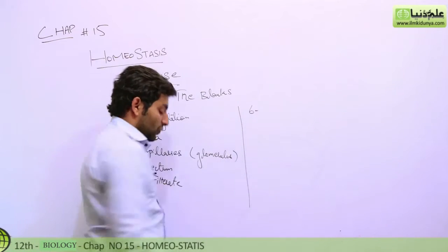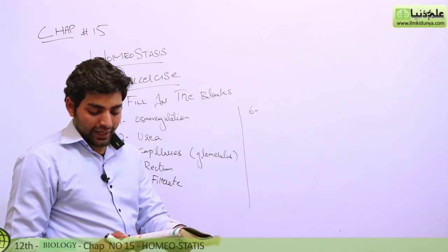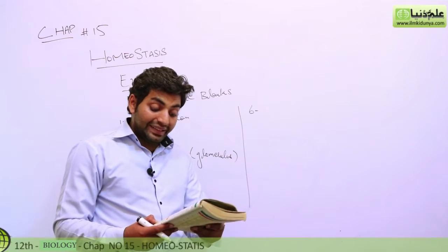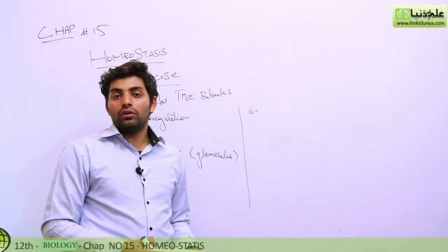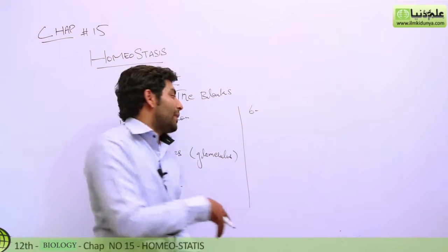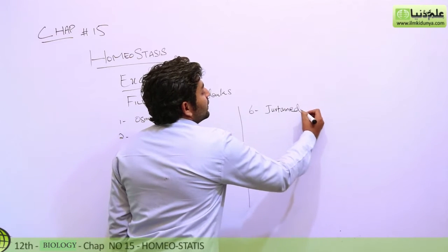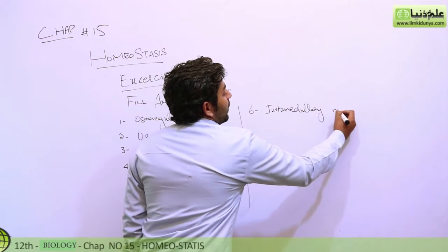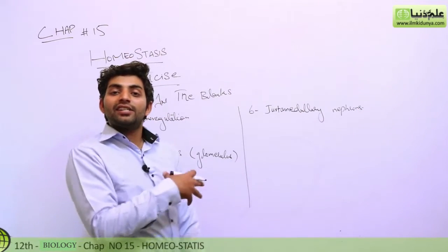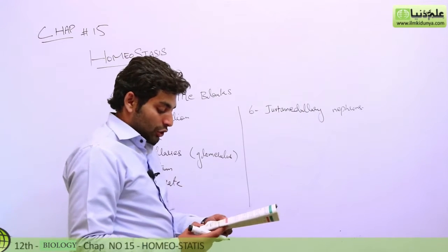The sixth blank: nephrons arranged along the border of cortex and medulla, with the tubule system looping deep into the inner medulla, are called juxtamedullary nephrons. Those in the cortex are termed cortical nephrons.